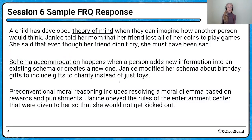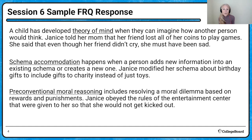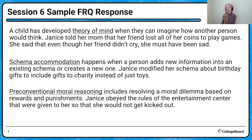Here's our sample FRQ response. This is Janice at a birthday party. We talked about theory of mind — a child has developed a theory of mind when they can imagine how somebody else might think or feel. In this case, Janice told her mom that her friend lost all of her coins to play games, and even though her friend didn't cry, she must have been sad. That shows theory of mind.